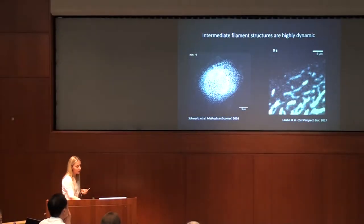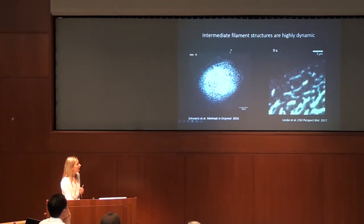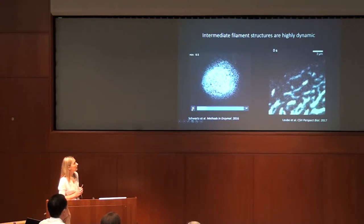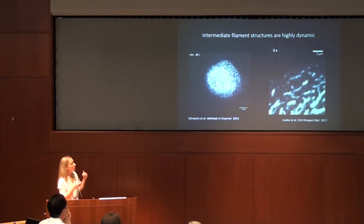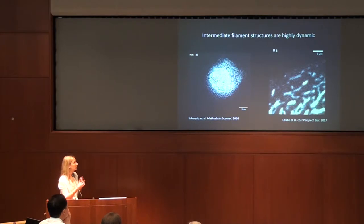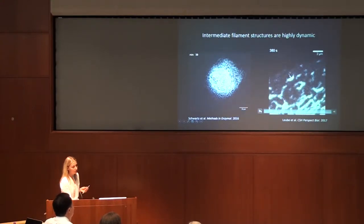Early on, when these proteins were first studied, because they're structural and important for mechanical integrity, it was assumed they're rigid. But we know from cell biology imaging experiments that they're quite dynamic. This is a cell where the intermediate filaments have been fluorescently labeled. You can see smaller particles forming at the edges of the cell, and thicker filaments converging around the nucleus. If you zoom in, you can see an arrow pointing to a particle that starts out small but then grows into a longer filament.